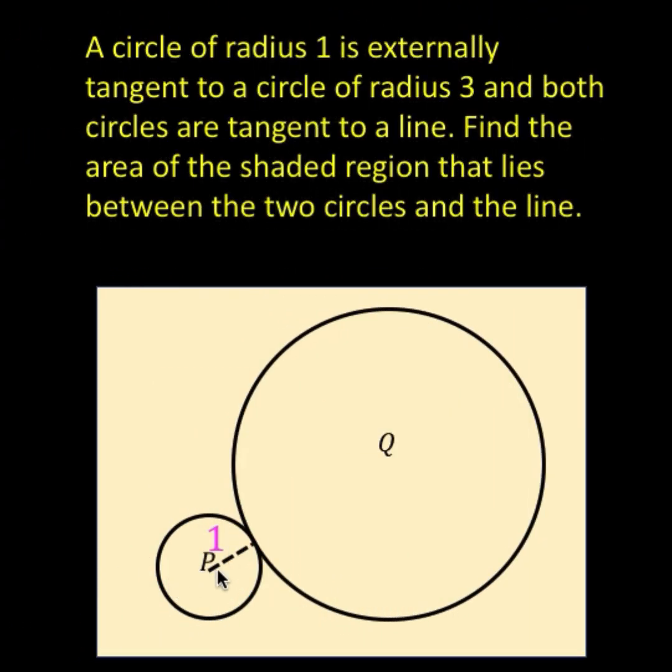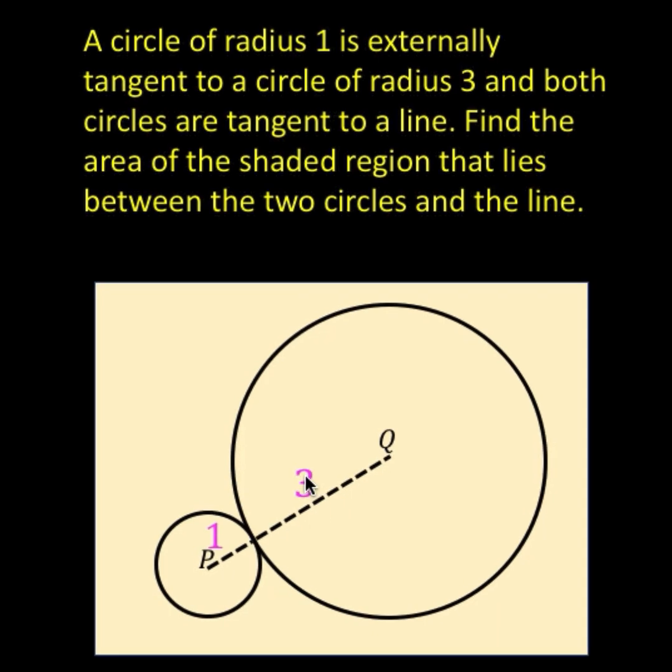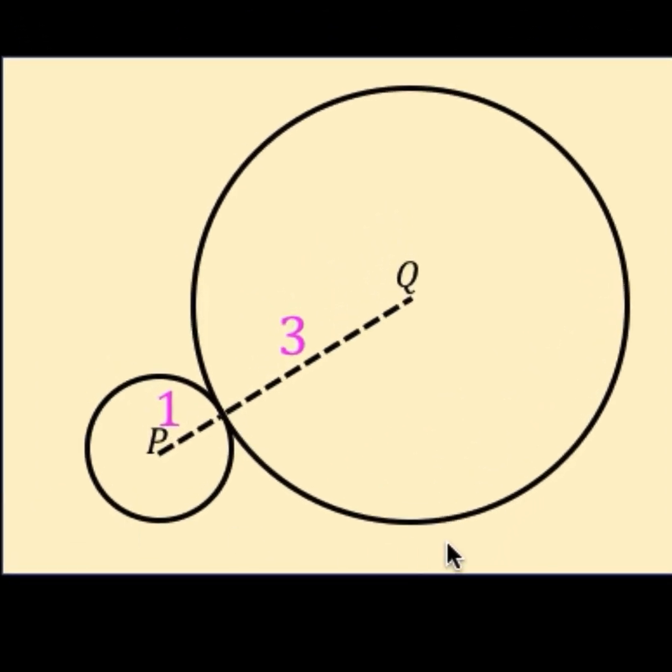Circle P has a radius of 1 unit and circle Q has a radius of 3 units. Both of these circles are tangent to this blue line and we want to know what is the area of the shaded region between the two circles and the blue line. So we want to find what is the area of this red shaded region.